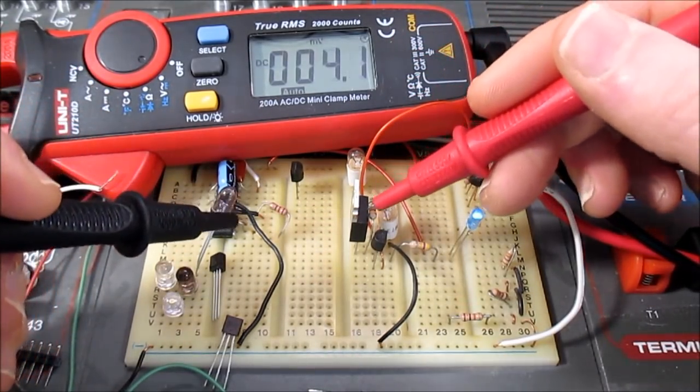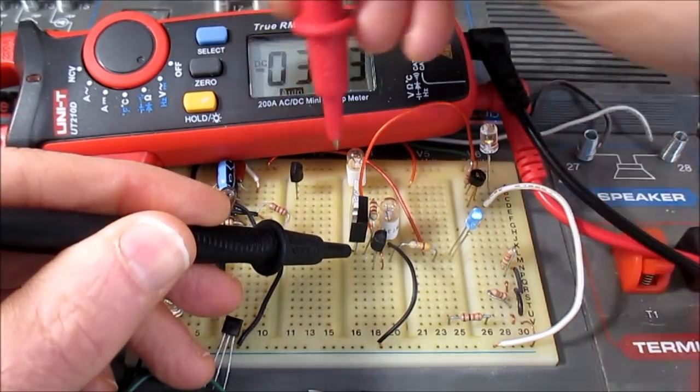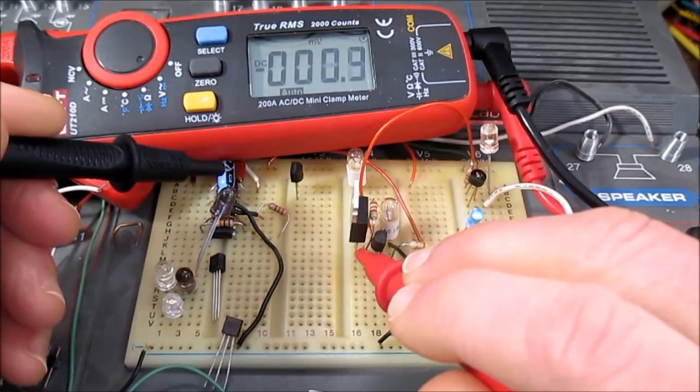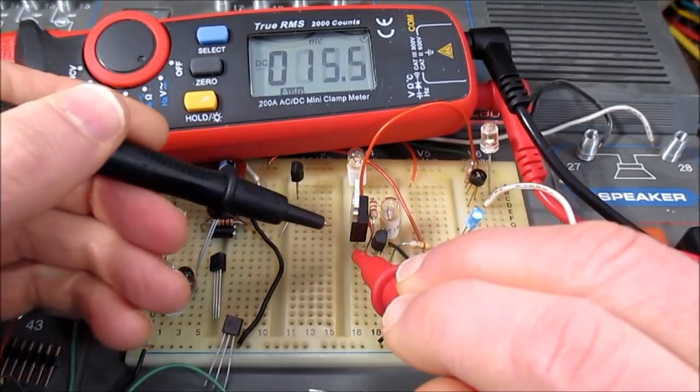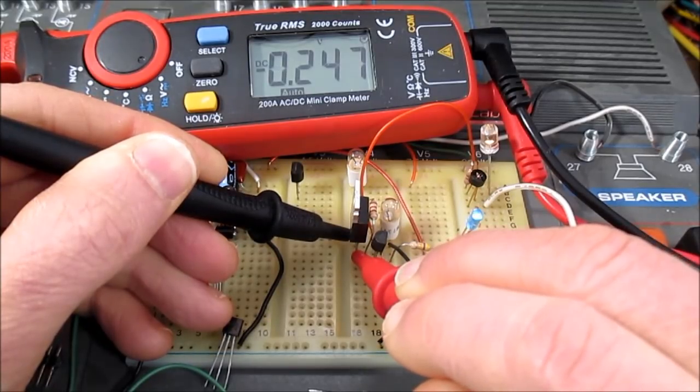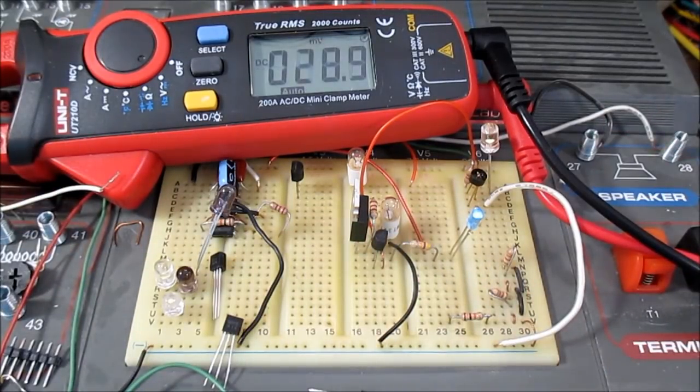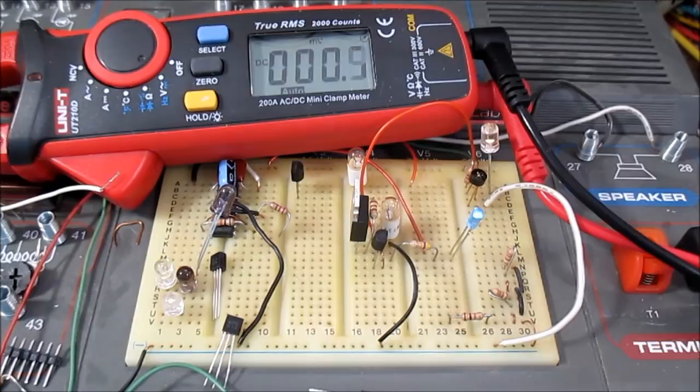So if I meter across this resistor, the speed up resistor, which goes from base to emitter. And let me do it this way so I don't block the view. There is 247, about 250 millivolts across that resistor. So if we do the ohms law, that's 247 millivolts divided by 120 ohms, which is the value. I use the same value that I did in the Darlington circuit. In this case, we have 2 milliamps flowing.